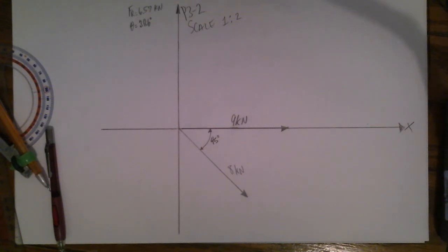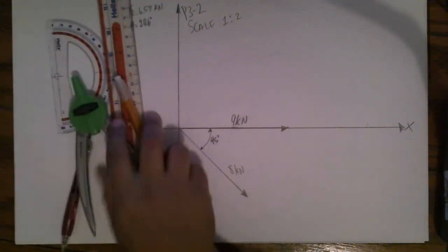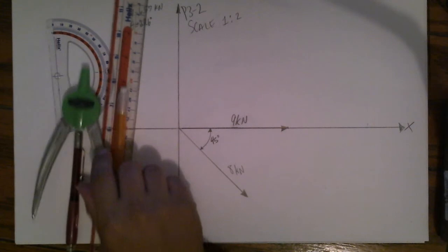Here's problem 2-3 from the Hibler Statics book 12th edition. The problem can be drawn and solved using a ruler, compass, and a protractor. No calculator is needed.